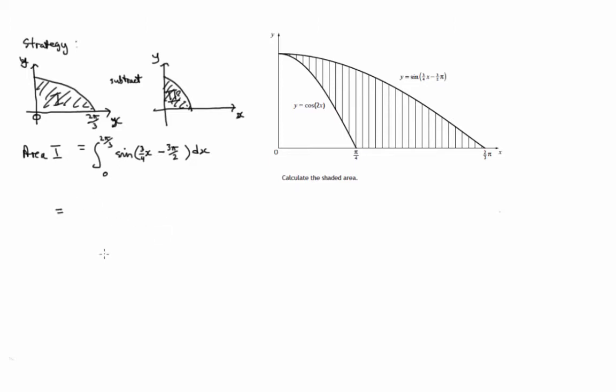When we integrate a sine, we get negative cosine. In special integrals, we divide by the coefficient of x, which is 3/4. You could think backwards and try to differentiate this using the chain rule. You divide by the coefficient of x in this linear expression, and evaluate between 0 and 2π/3.